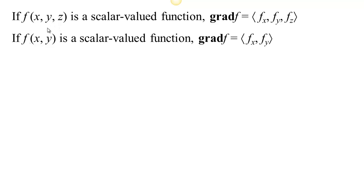If you have a function that's scalar valued — in other words the output is a scalar — then you can find the gradient, which makes a vector field. The three components correspond to the partial derivatives with respect to x, y, and z. If your function only depends on two variables, you can make a 2D vector field by taking the derivative with respect to each variable. Together those form the gradient of f.